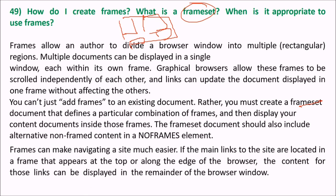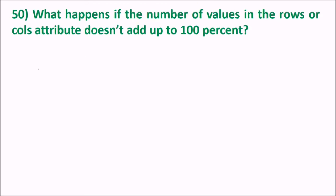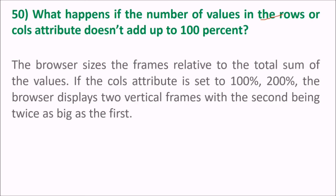When is it appropriate to use frames? Frames can make navigation of a site much easier. If the main links to the site are located in a frame that appears at the top or along the edge of the browser, the content for those links can be displayed in the remainder of the browser window. If the cols attribute says 200%, 200%, the browser displays two vertical frames, the second being twice as big as the first.